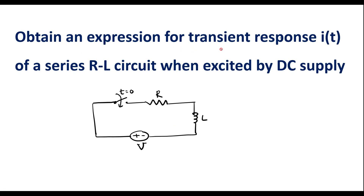Obtain an expression for the transient response i(t) of a series RL circuit when excited by a DC supply. This is a series RL circuit where R and L are connected in series with a DC supply voltage. Now let me assume current i(t) is flowing in the circuit.